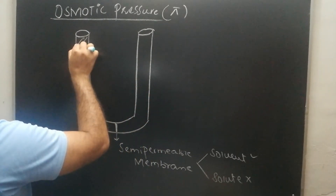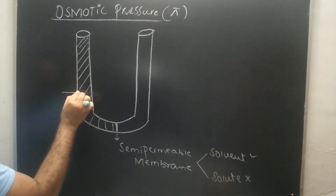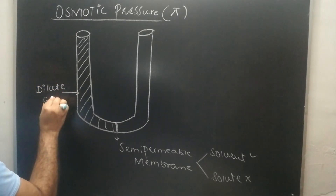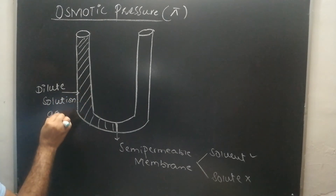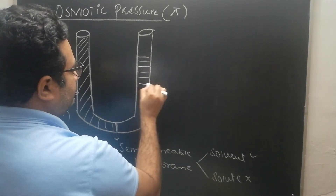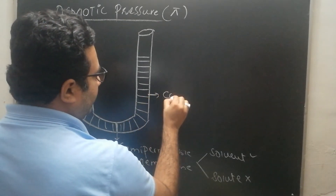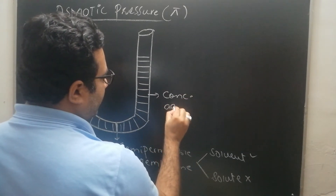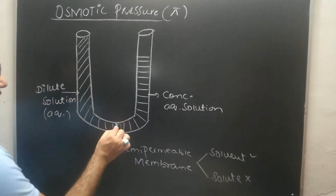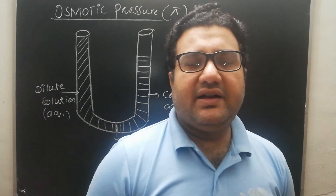Now at one side of this U-shaped tube there is a very dilute solution, and on the other side there is a relatively concentrated solution.